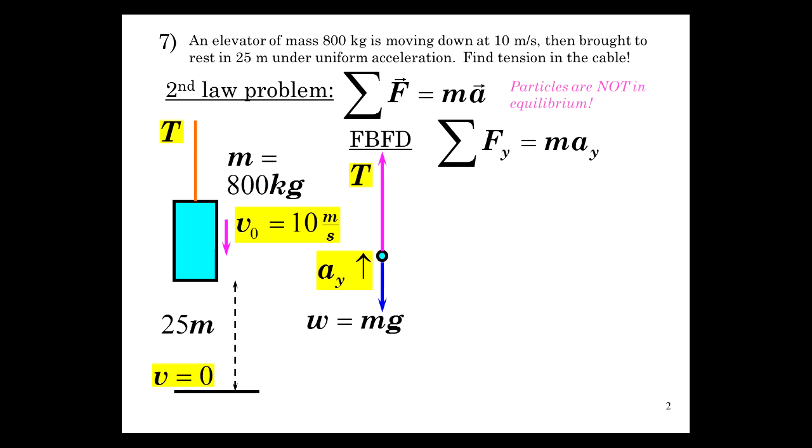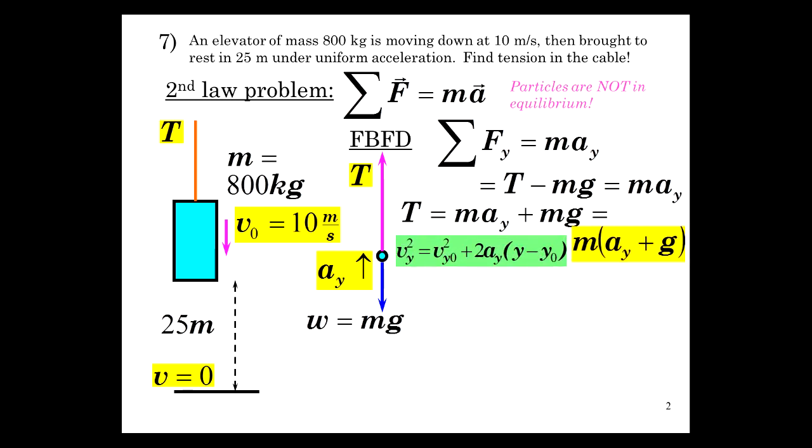Sum of Fy equals may. That would be the tension minus mg equals ma in the y direction. So T equals ma plus mg, m times a plus g. Along with that we're going to use the kinematics equation where we have distance known and velocities before and after, so we're going to solve for the acceleration.